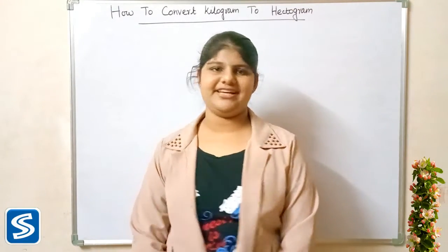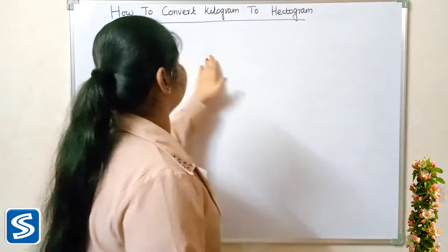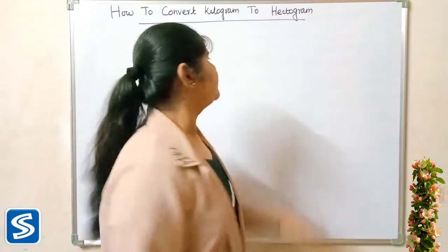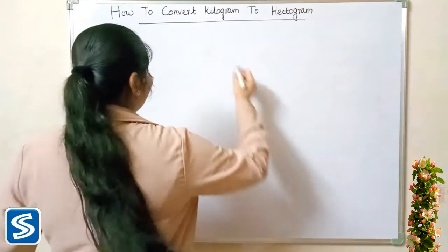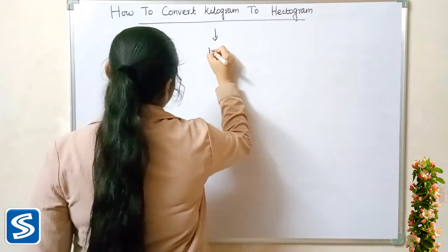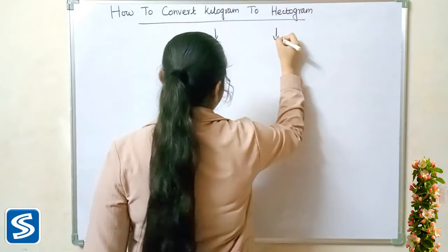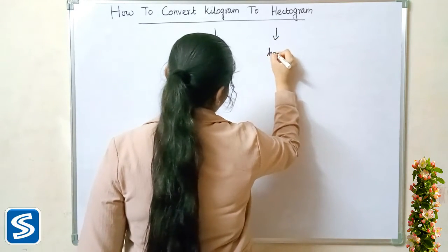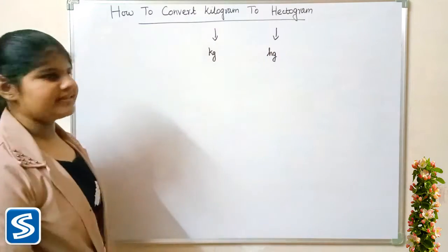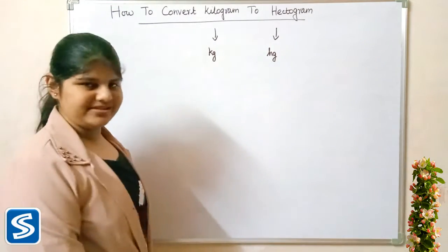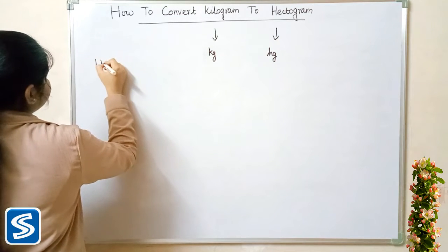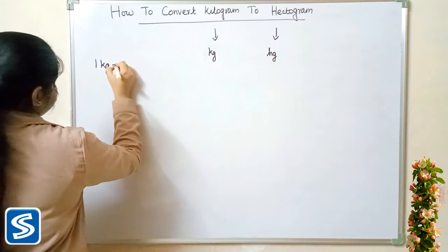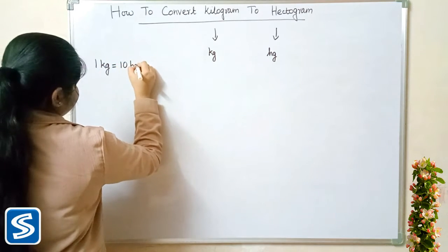Welcome to this channel. In this video I am going to teach how to convert kilogram into hectogram. Kilogram and hectogram are units of weight in the metric system. The short form of kilogram is kg and the short form of hectogram is hg. To convert kilogram into hectogram we use the formula: 1 kilogram is equal to 10 hectograms.